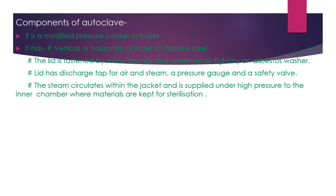Components of the autoclave: it is a modified pressure cooker or boiler consisting of a vertical or horizontal cylinder made of stainless steel. The lid is fastened by screw clamps and rendered airtight by an asbestos washer. The lid has a discharge tap for air and steam, a pressure gauge, and a safety valve. Steam circulates within the jacket and is supplied under high pressure to the inner chamber where materials are kept for sterilization.